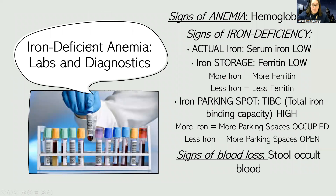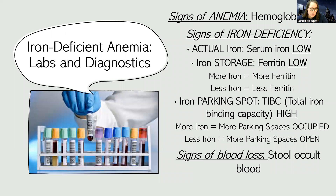Something that's big in cardiac in general, but especially in anemias, is you need to know your labs. You definitely want to know your normal hemoglobin. For iron deficient anemia, as it's an anemia, their hemoglobin is going to be low. We look for signs of anemia first, and then we also want to look for signs of iron problems.